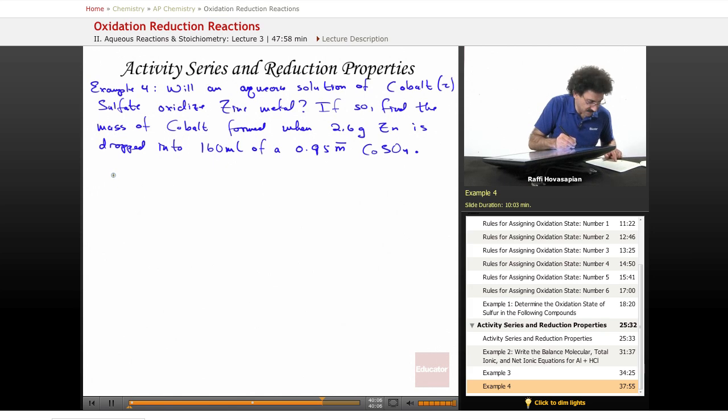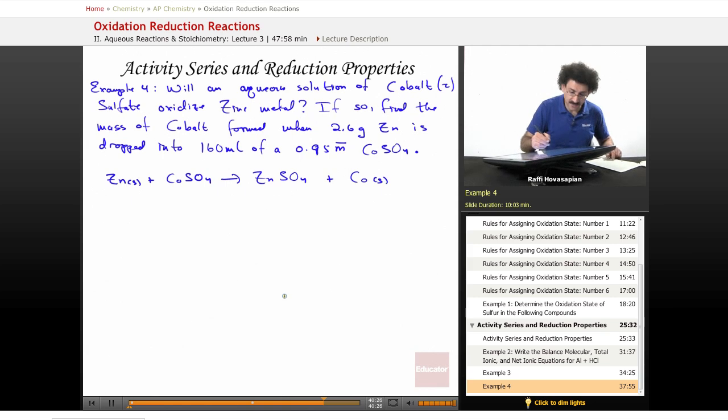I have zinc metal, solid, plus cobalt sulfate. It'll turn into zinc sulfate. Zinc carries a positive 2 charge, so there's no balancing to do here. And we have, it'll form cobalt metal. Good, nice and easy.